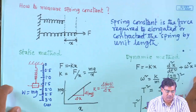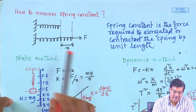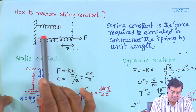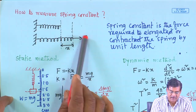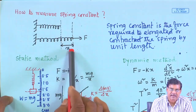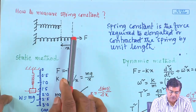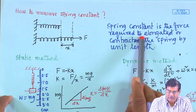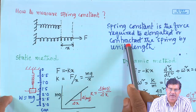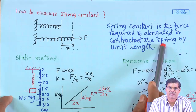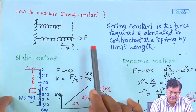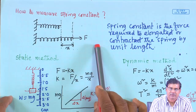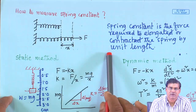How to measure the spring constant: you have a spring which is elongated after applying a force F, elongated by x. The spring constant is basically the force required to elongate or contract the spring by unit length, so spring constant k = F/x.